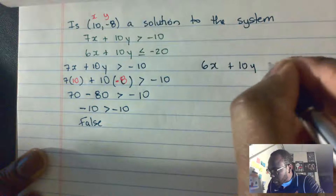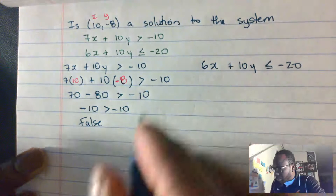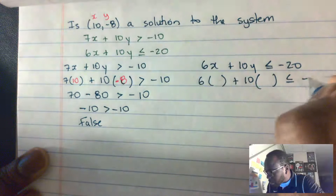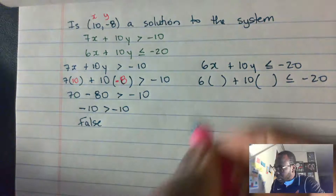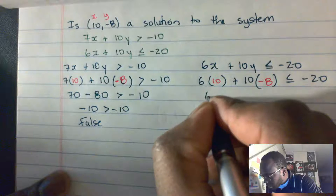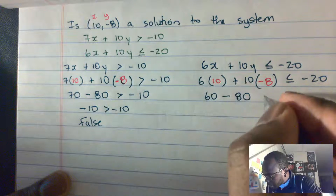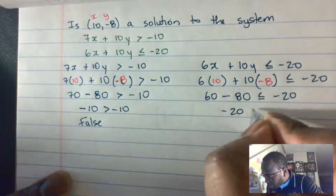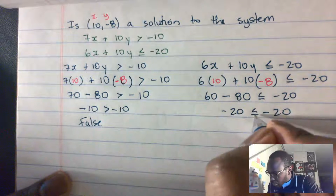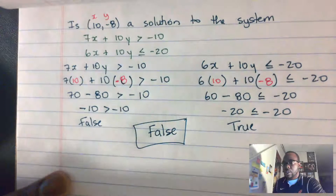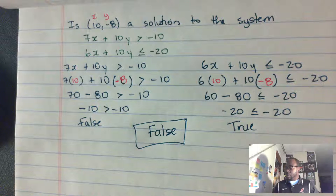Now checking the second inequality: 6x + 10y ≤ -20. It's 6 times x plus 10 times y, less than or equal to -20. With x as 10 and y as -8: 6 times 10 is 60, minus 80 is -20, less than or equal to -20. Negative 20 equals negative 20, so this is true. But the whole system is still false because both inequalities are not true.